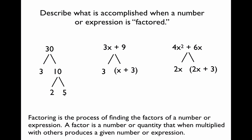And why are these factors? Because when you multiply 3, 2, and 5, they give you 30. It's the process of finding the factors of a number or an expression. A factor is a number or quantity that when multiplied with others produces a given number or expression.